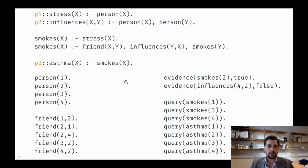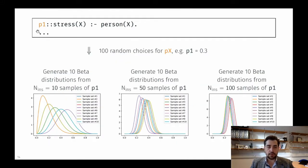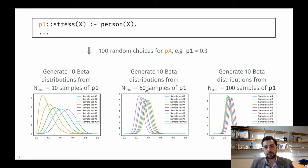For each probability in the program, we randomly chose 100 probabilities between 0 and 1 from a uniform distribution. For each assignment, we generated 10 beta distributions using n equal to 10 samples, then 50 samples, then 100 samples. Overall we have 1000 random instantiations of beta distributions for experimentation.